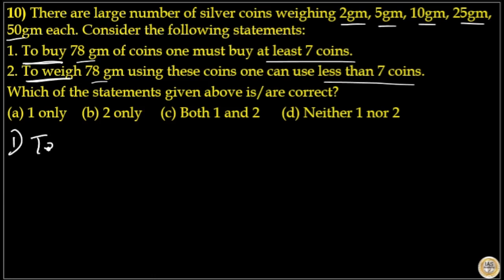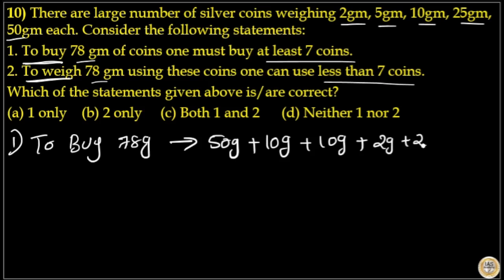In the first case, to buy 78 gram. Here, there is no or coin. So, I will take 50 gram first. Then, I will not take 25 because there is no or coin. So, 10 gram, 2 coins, 2 coins of 10 gram each. Then, I will take 4 coins of 2 gram. That is 2 gram plus 2 gram plus 2 gram plus 2 gram. That is total 4 plus 3, 7 coins. So, at least 7 coins is needed to buy 78 gram.